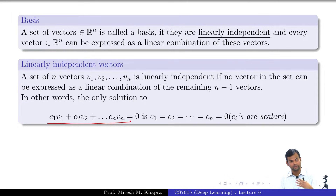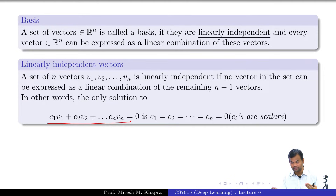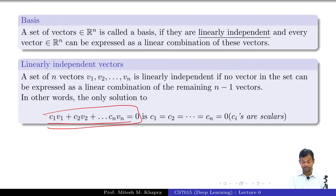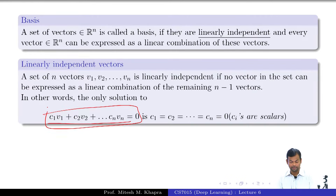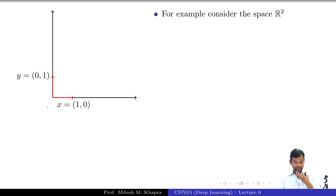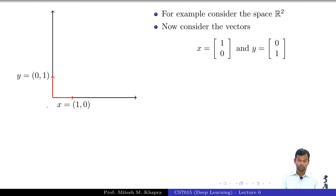Linear independence means that any vector from this set cannot be expressed as a linear combination of the other vectors in the set, and a more formal way of saying that is this. Let us consider some very simple examples: in the space R², we consider the two vectors (1,0) and (0,1) — are they linearly independent? Yes.